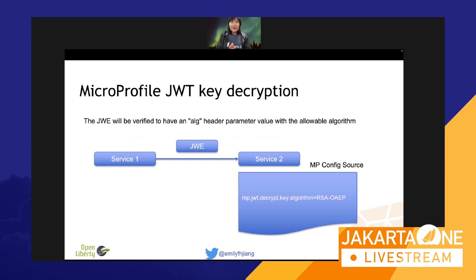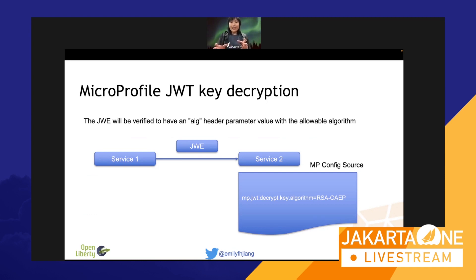The third configuration added to JWT 2.1 is about key algorithms — it specifies which algorithms are allowed. So you can say only this particular algorithm is allowed, to deprecate others.